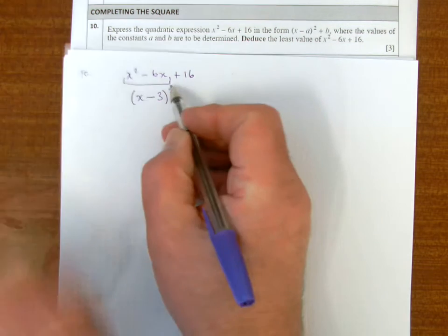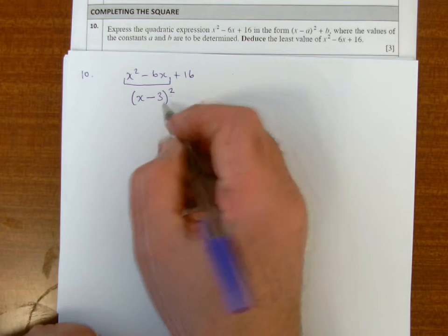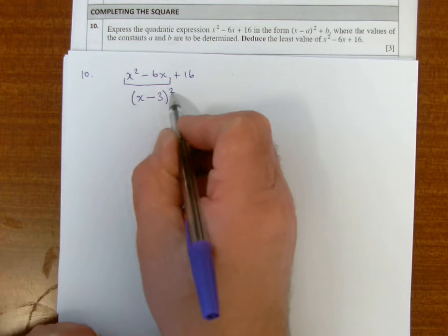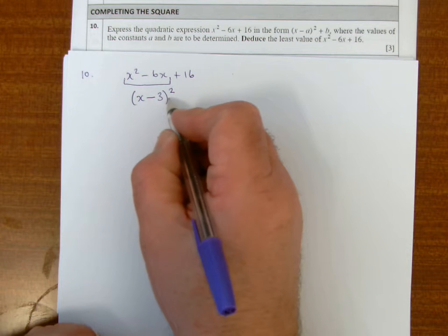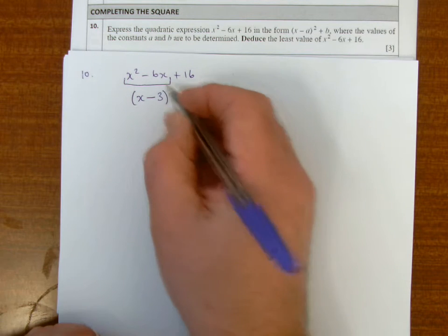So the first part is going to combine to x minus 3 all squared, and when I expand this bracket x minus 3 all squared, I've got a plus 9 on the end, so I've got 9 too many.